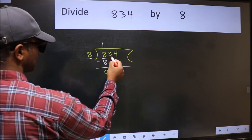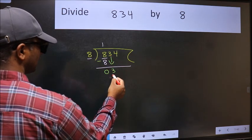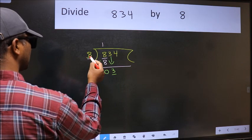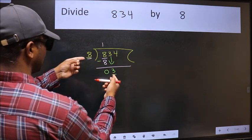After this, bring down the beside number 3 down. Now here we have 3 and here 8. 3 is smaller than 8.